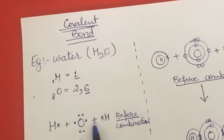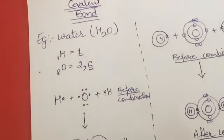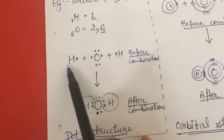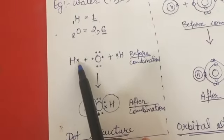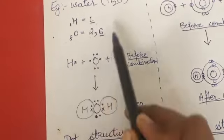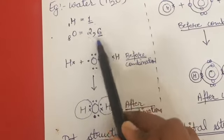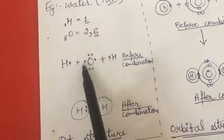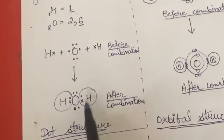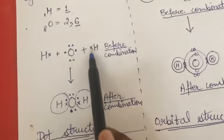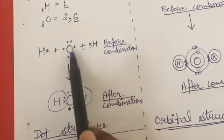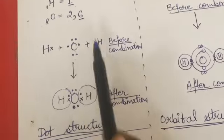Here is the dot structure before and after combination. Before combination, hydrogen's outermost electron is represented with a cross, and oxygen's six electrons are represented with dots. After combination, hydrogen shares its one electron with oxygen — both contribute one electron each, forming a single covalent bond.